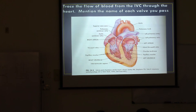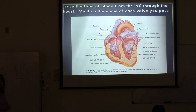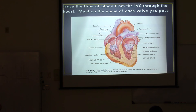Another student traces the full path: superior and inferior vena cava drain into the right atrium, through the tricuspid valve to the right ventricle, then through the pulmonic semilunar valve, out to the pulmonary arteries to the lungs, back through the pulmonary veins to the left atrium, through the mitral valve, through the left ventricle, and through the aortic semilunar valve into the ascending aorta. Good job!